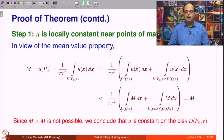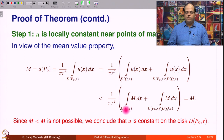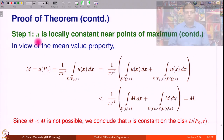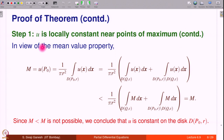This concludes the proof of step 1, where we have established that there exists r such that u is constant on the disk of radius r centered at p₀.